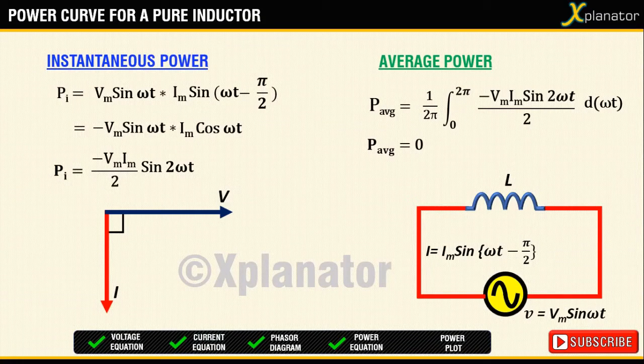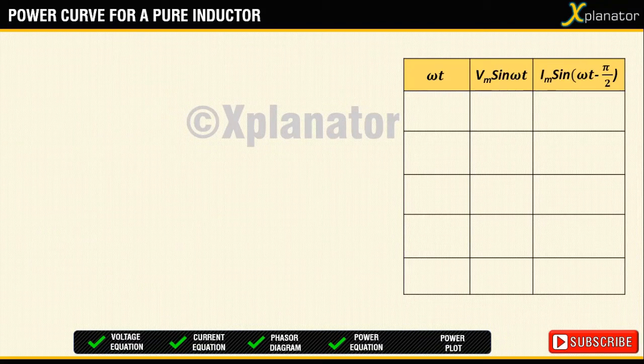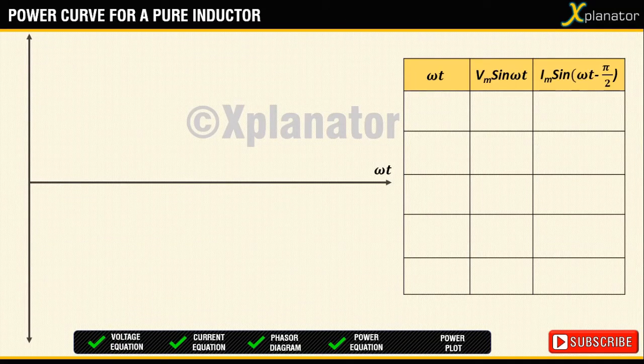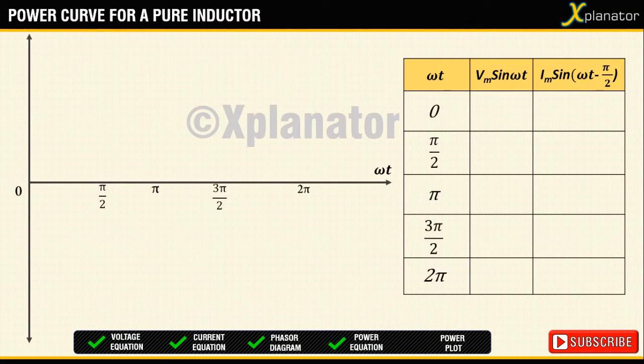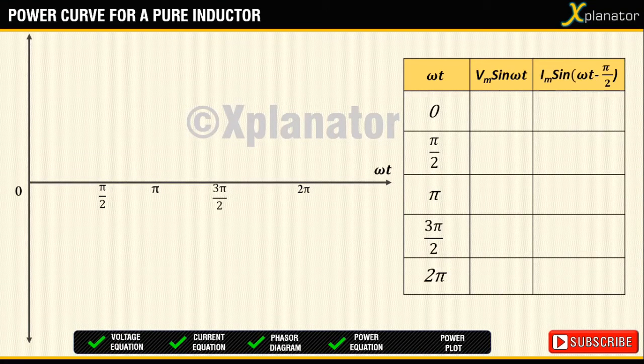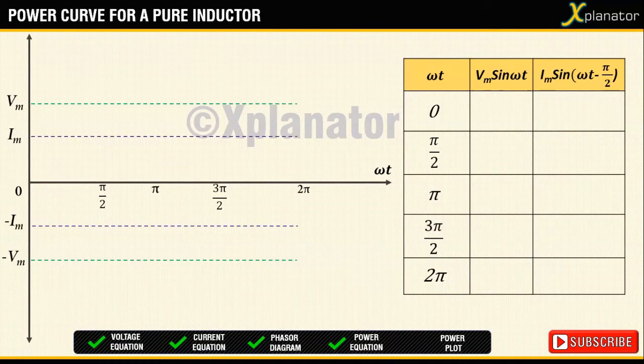Now that we have the equations for voltage, current and power, we can go ahead and start plotting them. To plot voltage and current, consider an xy plane with ωt on x axis. Draw a table to note down the voltage and current values. Mark the values of ωt on x axis and that of voltage and current on y axis.